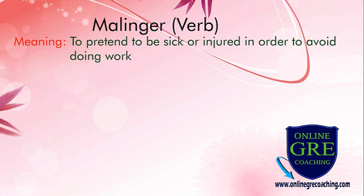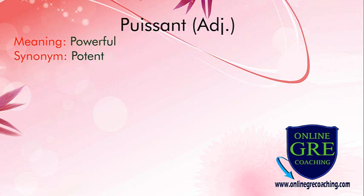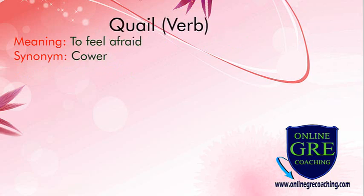Malinger: to pretend to be sick or injured in order to avoid doing work. Punctilious: very careful about doing things in a correct and accurate way; synonyms are meticulous and careful. Poesant: means powerful; synonym is potent. Quell: means to feel afraid; synonym is scour.